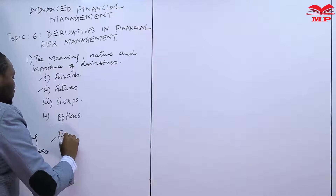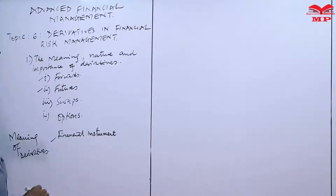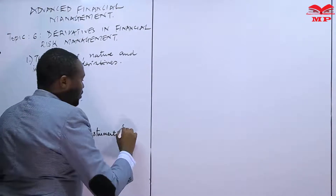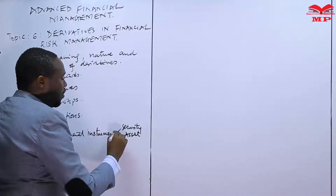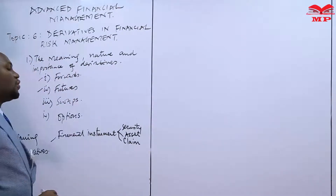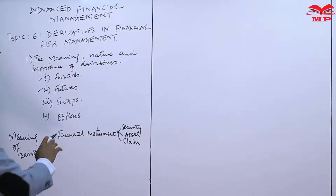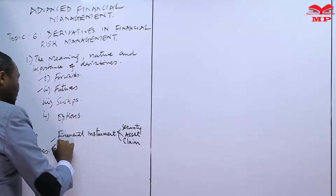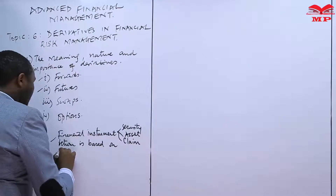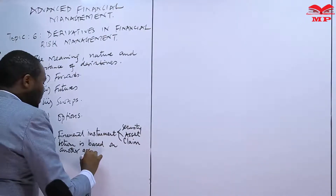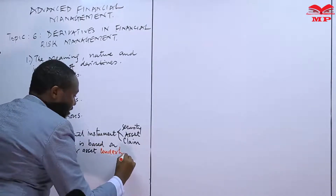This contract is the one in which the value is determined by something else. A derivative is a financial instrument, and financial instruments can be of various types — it can be a security, it can be an asset, or a claim to future benefits of a company's cash flows. The return of this financial instrument is based on an underlying — based on another asset. And this asset we are calling the underlying.